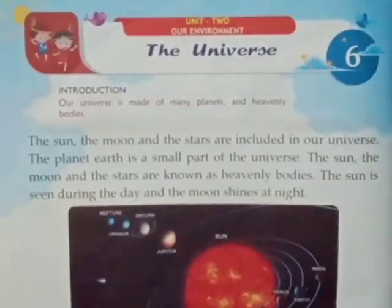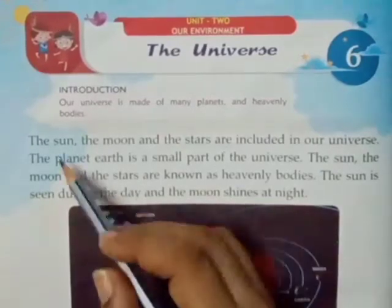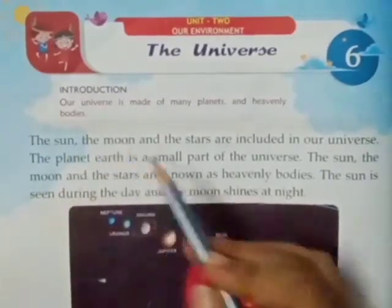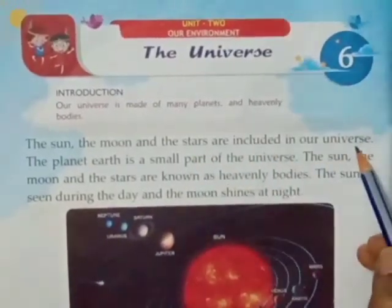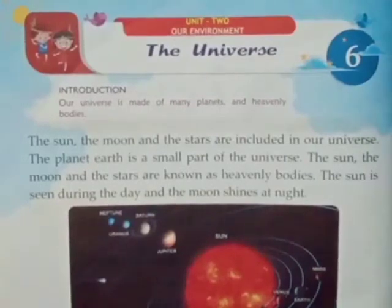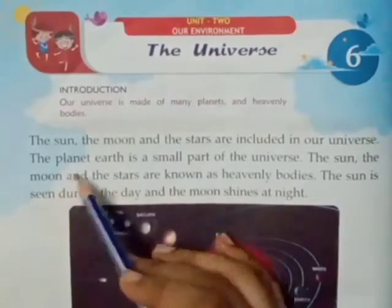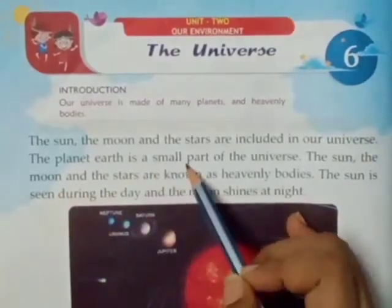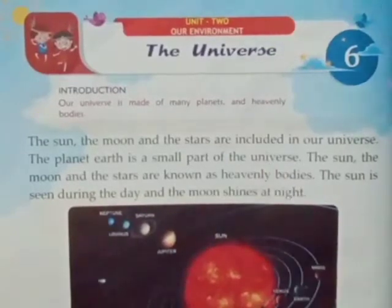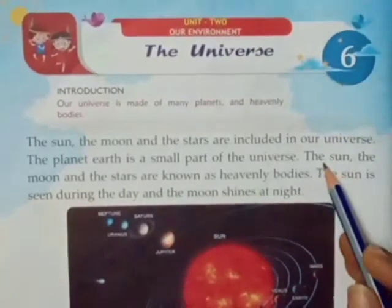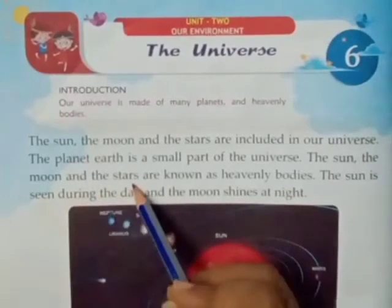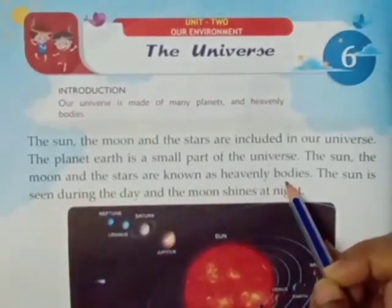The sun, the moon and the stars are included in our universe. Sun, moon, stars hamaarii duniya me included hotta hai — shamil hoona, thik hai? The planet Earth is a small part of the universe. Aur jo universe hai na, uska ye Earth, hamaarii joh Earth planet hai na, wou eek bhoat hi chhota sa hissa hai.